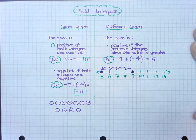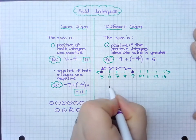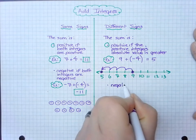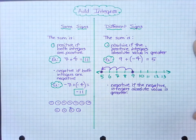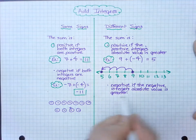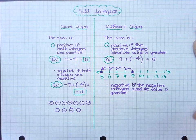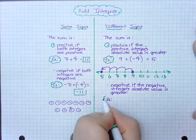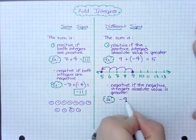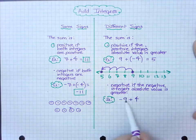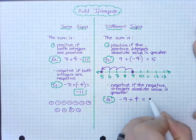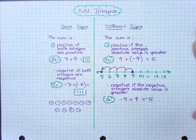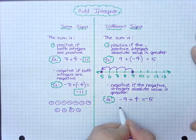So the sum is negative if the negative integer's absolute value is greater. So that means if I take the absolute value of two numbers and it happens to be the one that's negative, then the answer is going to be negative. So let's look at an example. This time I have negative 9 plus 4. We'll see how the negative 9 is the larger absolute value number. That means that the difference between these two, which is 5, is going to be negative.